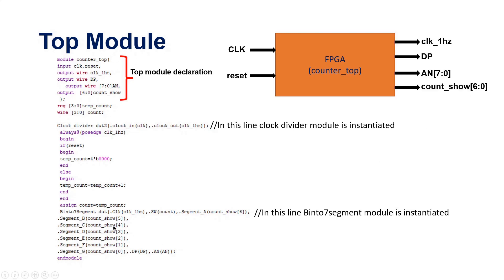Here is the code. You can see that always at the positive edge of the 1 Hz clock, this counter will count up. Correspondingly, the counter output will be fed to the 7-segment decoder and the output will be shown. This is structural programming.